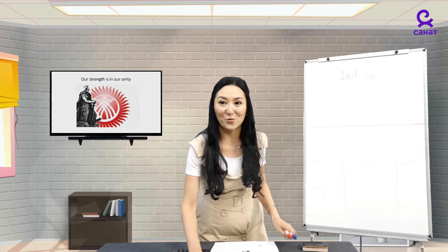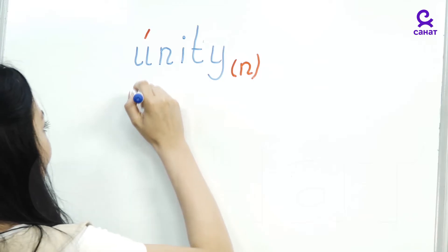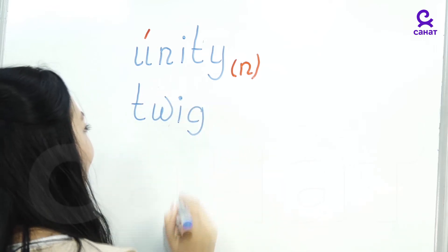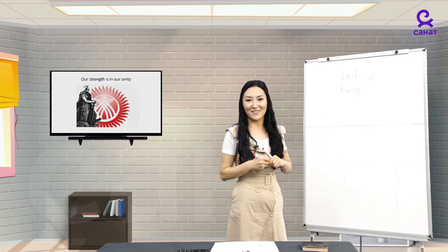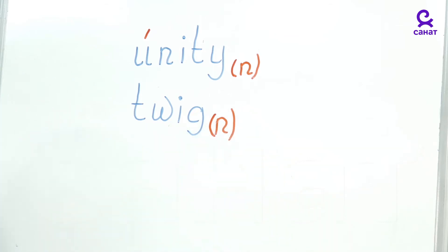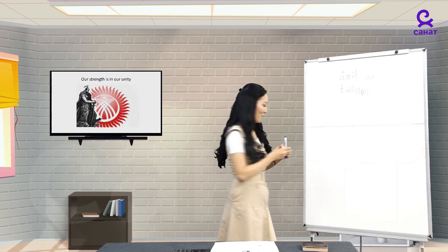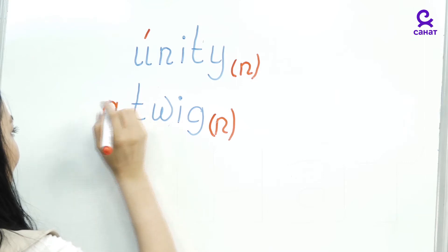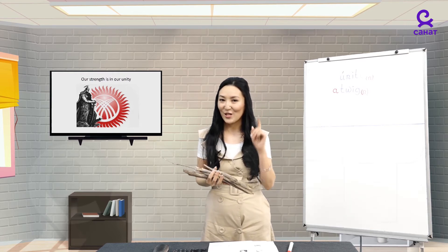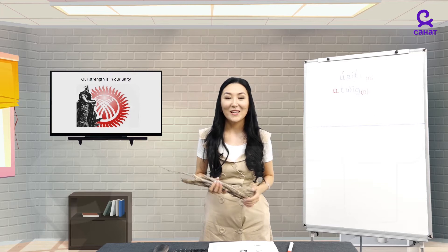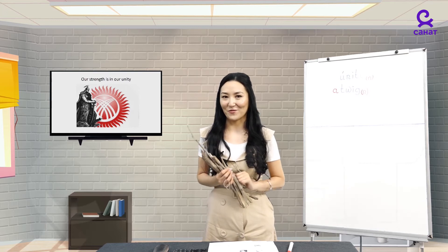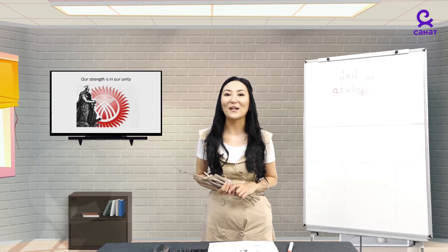How do we spell this word? T-W-I-G. Twig. Which part of speech is it? Right. Noun. Is it countable or uncountable? It's countable. A twig. What's this? Is it one twig? No. A bunch of twigs. Can you use it to make a fire? Yes. Now, repeat this phrase after me: A bunch of twigs. A bunch of twigs.